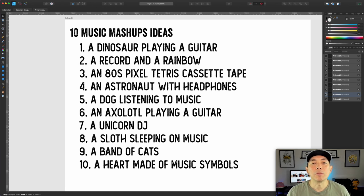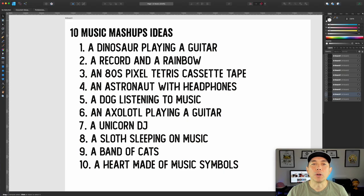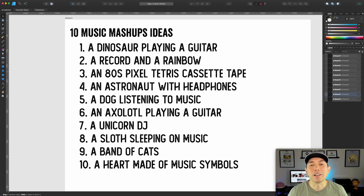To recap the four steps: one, find out what is selling; two, gather all that data; three, break down the data; four, brainstorm and come up with ideas. This is design research — finding out what designs sell on a specific print on demand shop. After this, you'll still need to work on keywords, SEO, and other things, but starting with a data-backed design idea is a strong first step. The design still needs to be well-executed and something people actually want to wear.